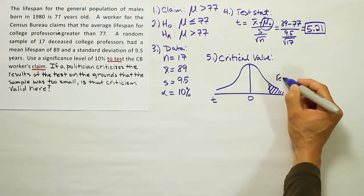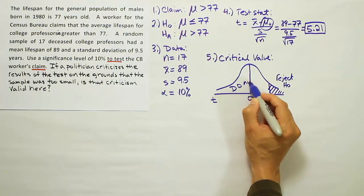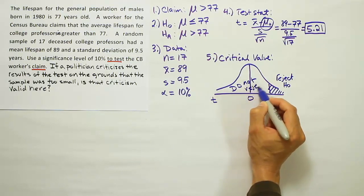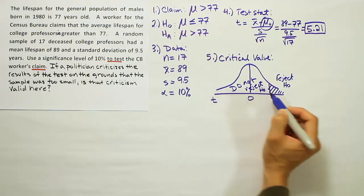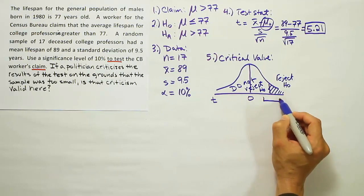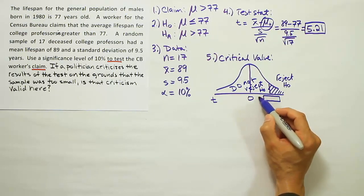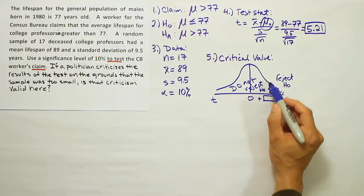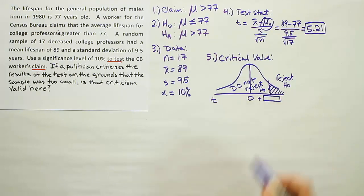If our test stat lands here, we're going to reject H0. If it lands here, we're going to say do not reject H0. The question is, where's the cutoff? What T-score, T-value, starts this rejection region? That's what we're trying to figure out.